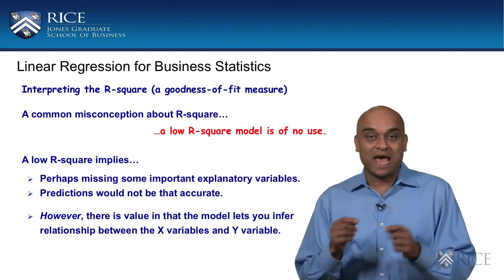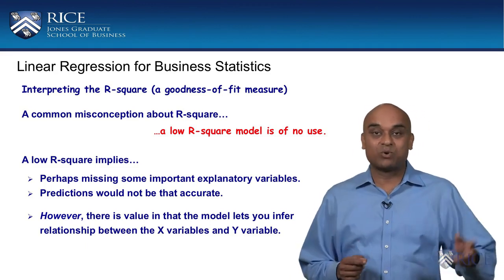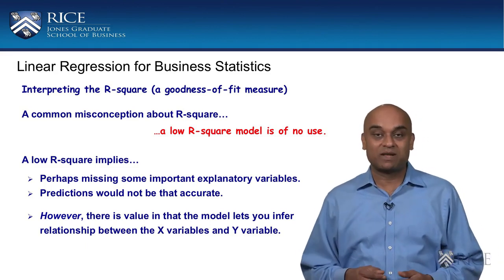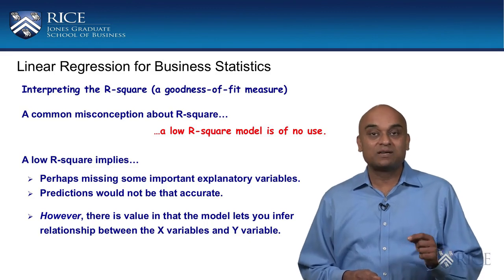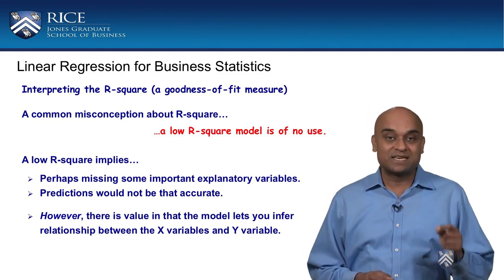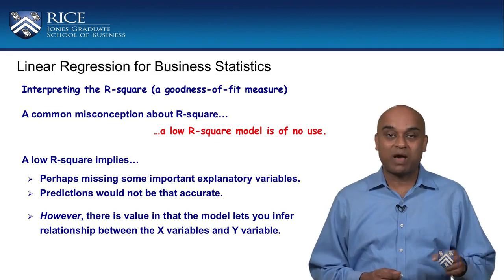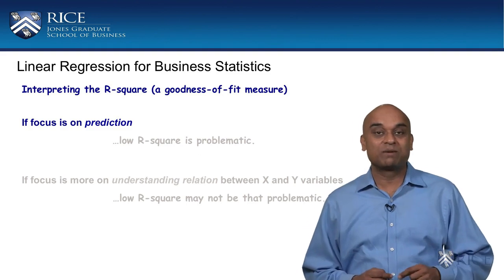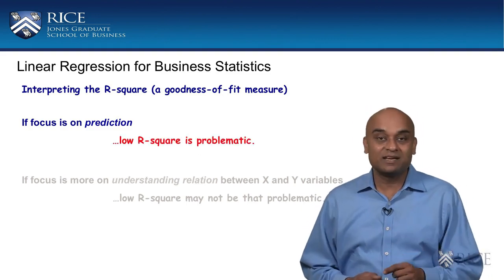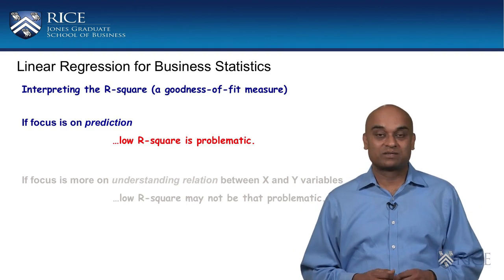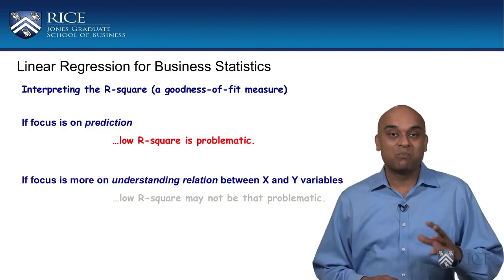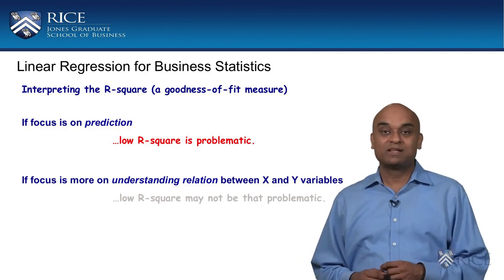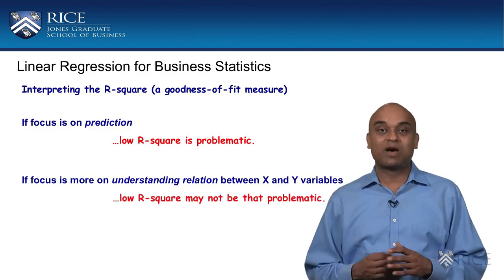The model tells you the relationship between price and annual income, between price and tax rate, and so on. It may not predict very well, perhaps because you are missing some important X variables. However, the model does tell you the relationship between the existing set of X variables and the Y variable. If your focus is to make predictions, then clearly you should be worried about low R squares. However, if your focus is more on understanding relationships between your X variables and the Y variable, then you may not be that concerned about low R squares.